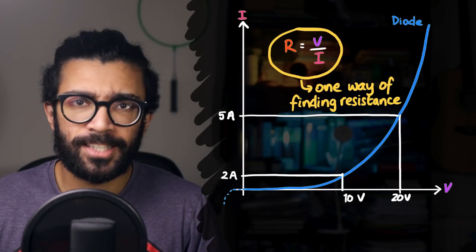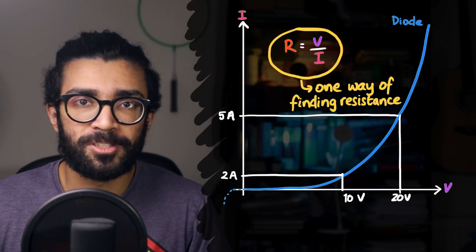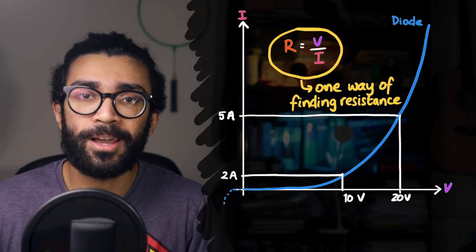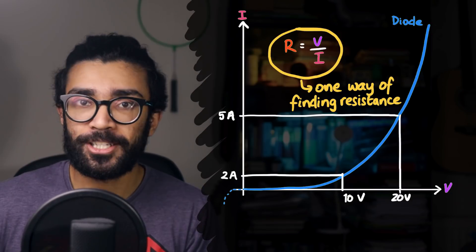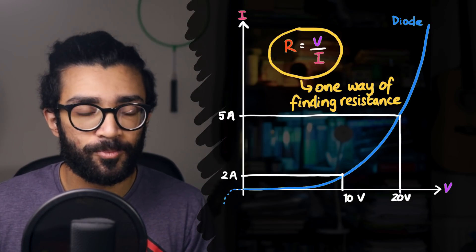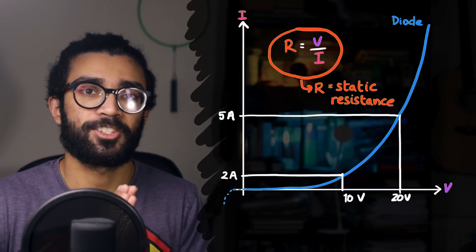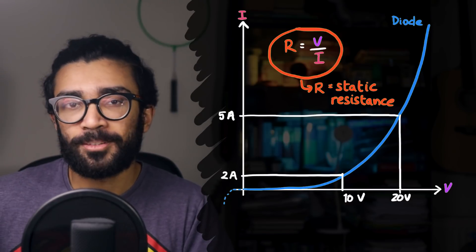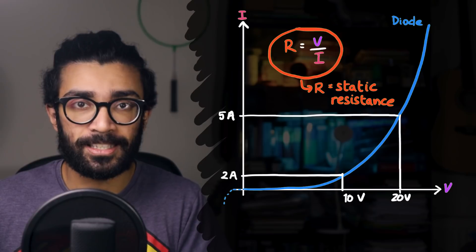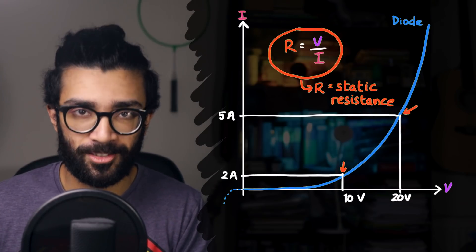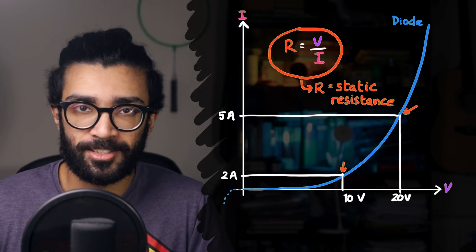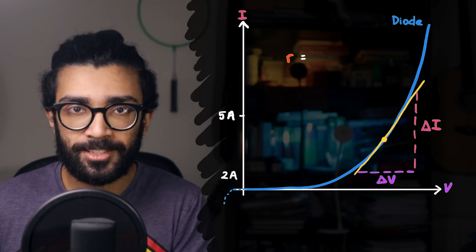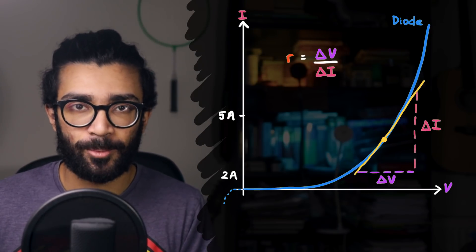Now, sticking with our diode, the way that we've used to find the resistance of this diode is just one method of finding its resistance, the ratio between the voltage and the current. This is actually defined as static resistance. Static because we only account for the voltage and current at one particular point on our graph.